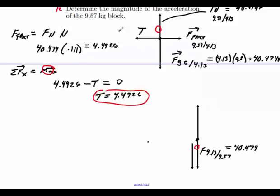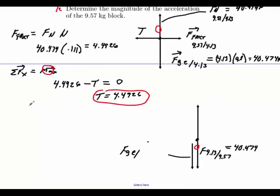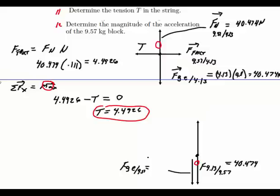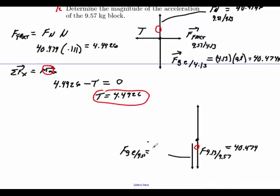Next one is to go ahead and find out what the force of gravity is going to be here. So the force of gravity is going to cause the earth onto the 9.57. It's going to be equal to the mass, the 9.57 times 9.8. So 9.57 times 9.8 equals 93.786.